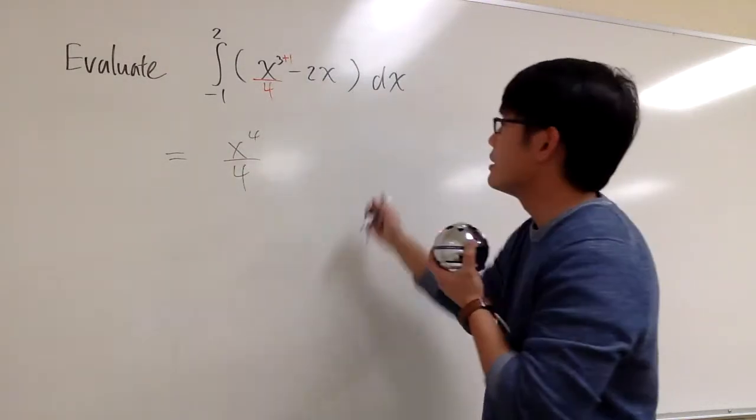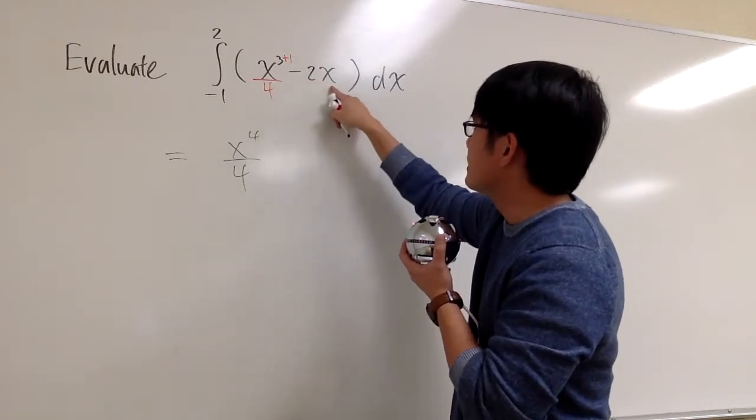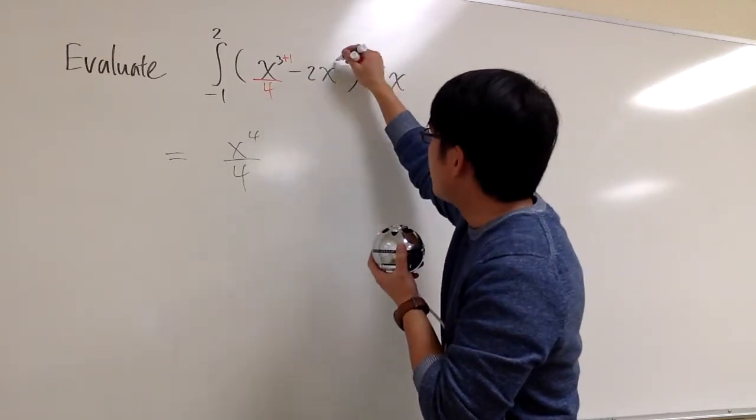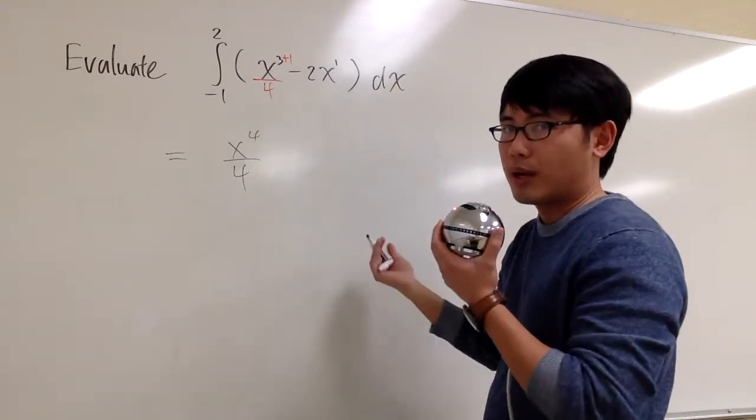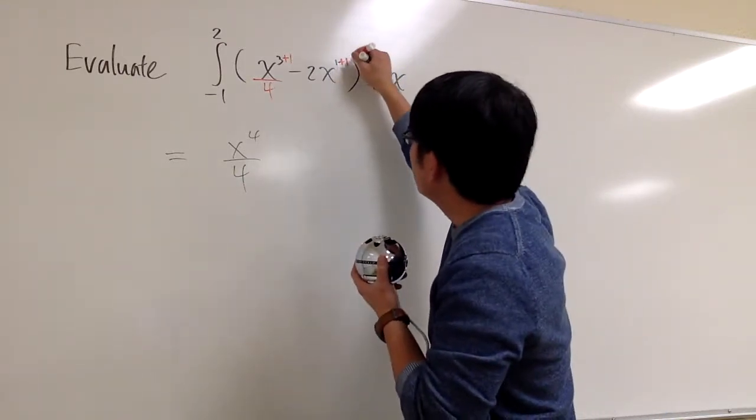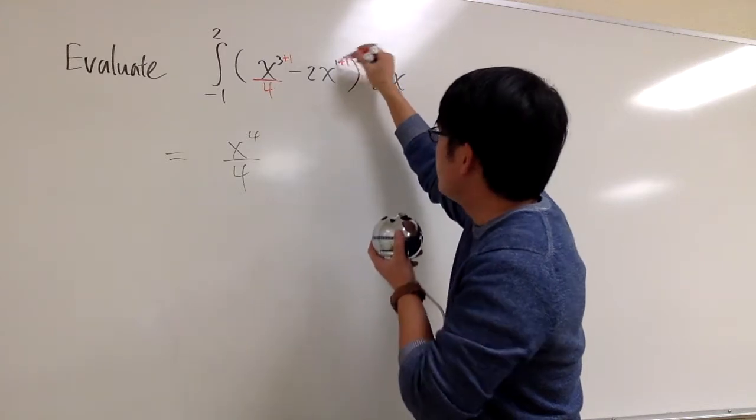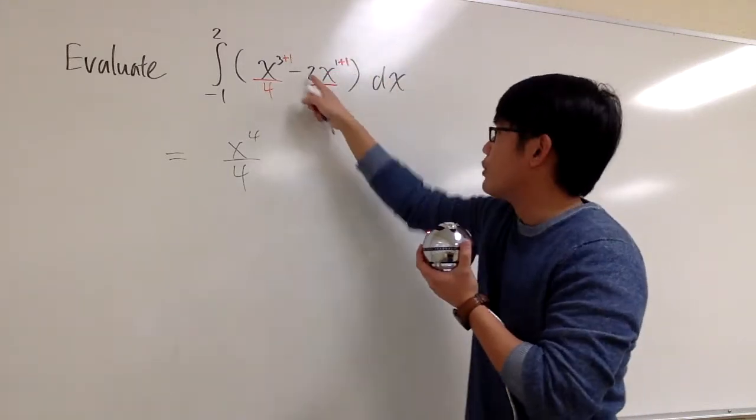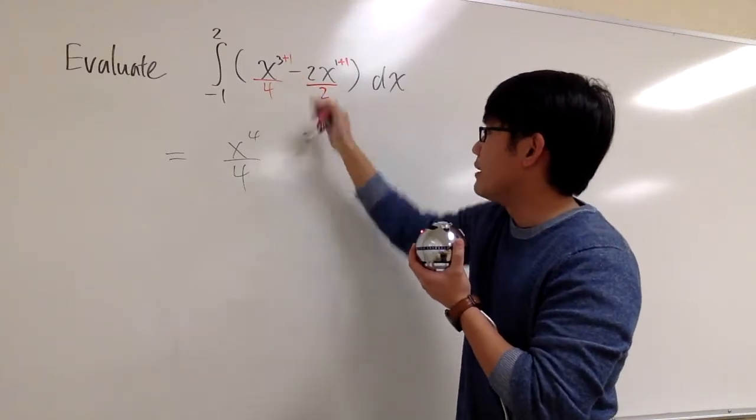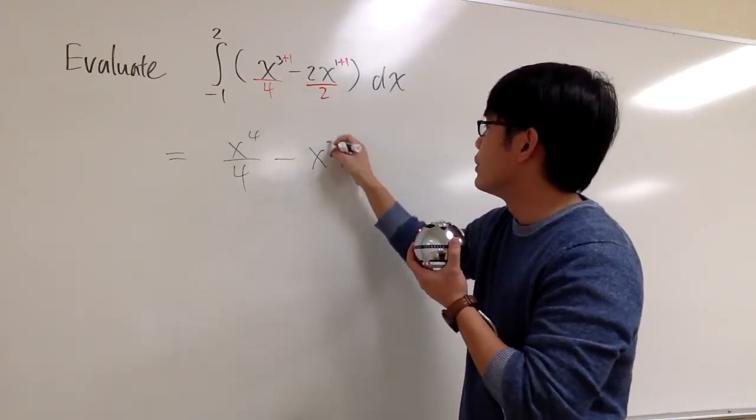And for the next part, this is minus 2x, and this is like x to the first power. Once again, I'm going to use the power rule backwards. Plus 1, right, to the exponent, 1 plus 1 is 2, and divide it by 2. So of course, the 2 will cancel. So we are just going to have minus x to the second power.